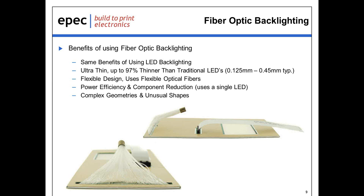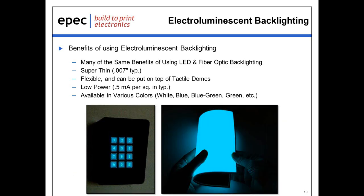Another solution, much like fiber optic technology, is electroluminescent backlighting. This is relatively new in the industry and has the same benefits as LED technology and fiber optics. These are super thin — you can get down to 7 thousandths of an inch in thickness. They're very flexible and can be placed on top of the rigid PCB and dome assembly, in between a graphic overlay. They're a very low-power solution, available in various colors including white, blue, and blue-green, and they have a very unique look to the assembly.